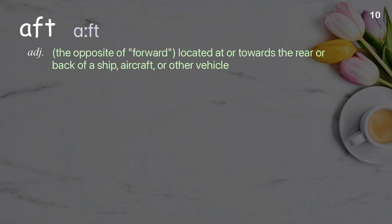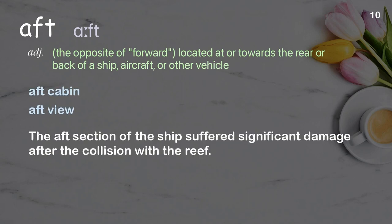Aft: the opposite of forward; located at or towards the rear or back of a ship, aircraft, or other vehicle. Examples: aft cabin, aft view. The aft section of the ship suffered significant damage after the collision with the reef.